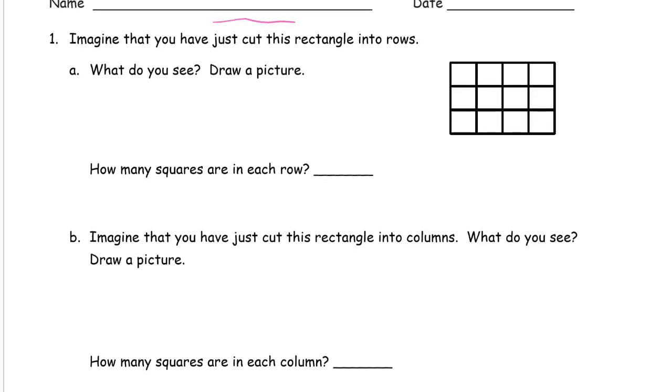Imagine that you have just cut this rectangle into rows. There and there is where I would have cut it. So it just says imagine, right? We're not going to take out the scissors and cut this up right now. It says, what do you see? Draw a picture. So I'm going to see a strip of 4, another strip of 4, and another strip of 4. And those are the rows. How many squares are in each row? There's 4 in each row.